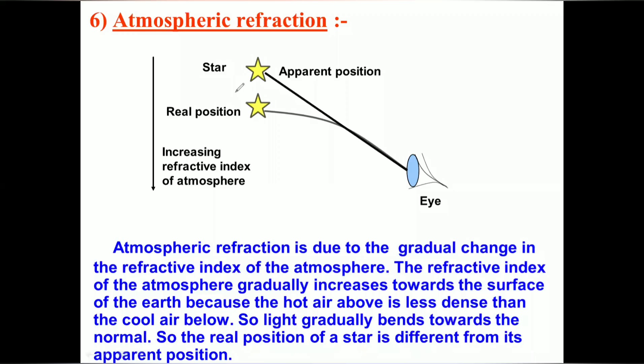First is the apparent position of stars. What do you mean by apparent position? Apparent position is not actually the real position. I can give you an example. Suppose we take a beaker that contains water, and we have placed a coin at the bottom.